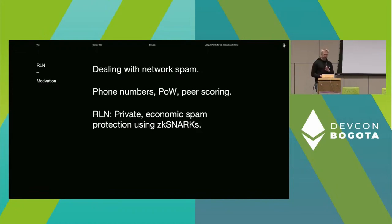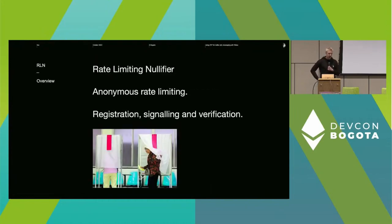The key idea here is to use RLN for private economic spam protection using ZK-SNARKs. RLN stands for Rate Limiting Nullifier — it's an anonymous rate-limiting mechanism based on ZK-SNARKs. By rate limiting we mean that you can only send N messages in a given period, and by anonymity we mean that you can't link messages to a publisher. We configure it like a voting booth where you're only allowed to vote once every election. It can be used for spam protection in P2P messaging systems and also rate limiting in general, such as for a decentralized CAPTCHA.